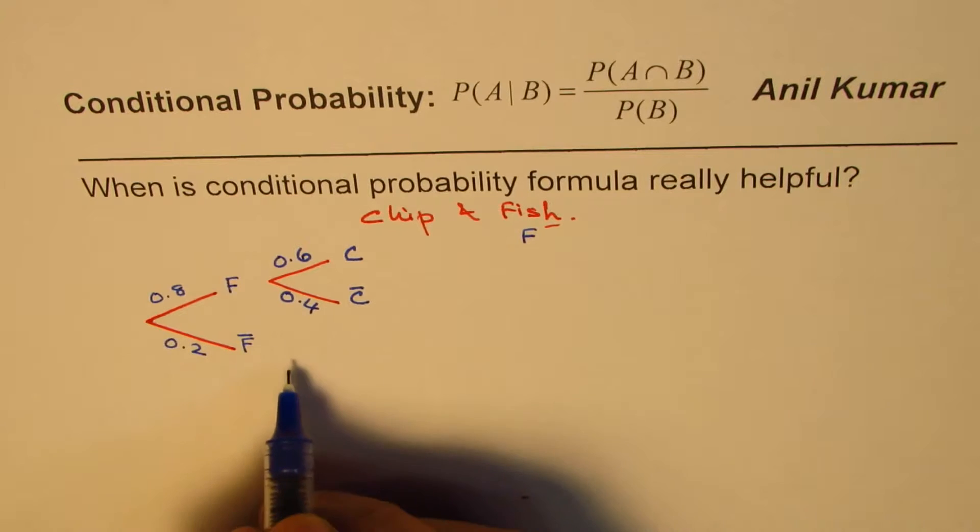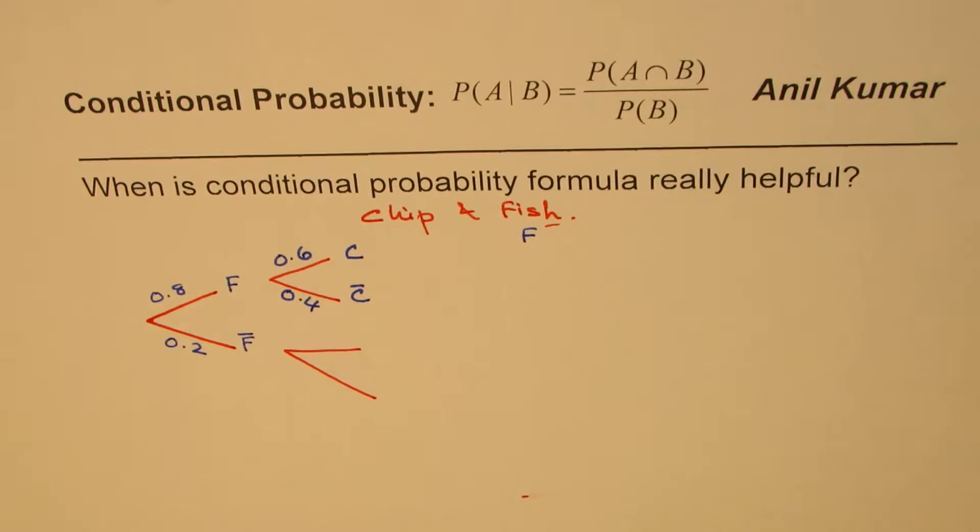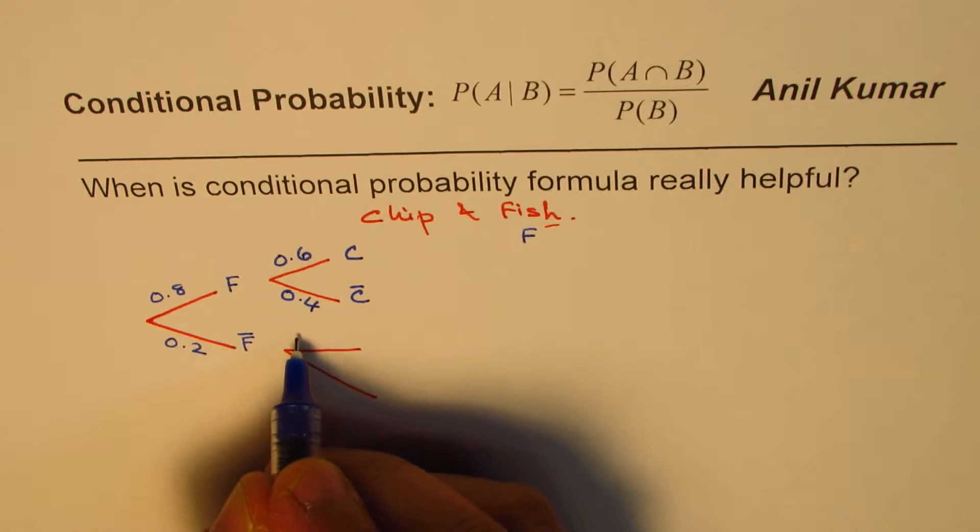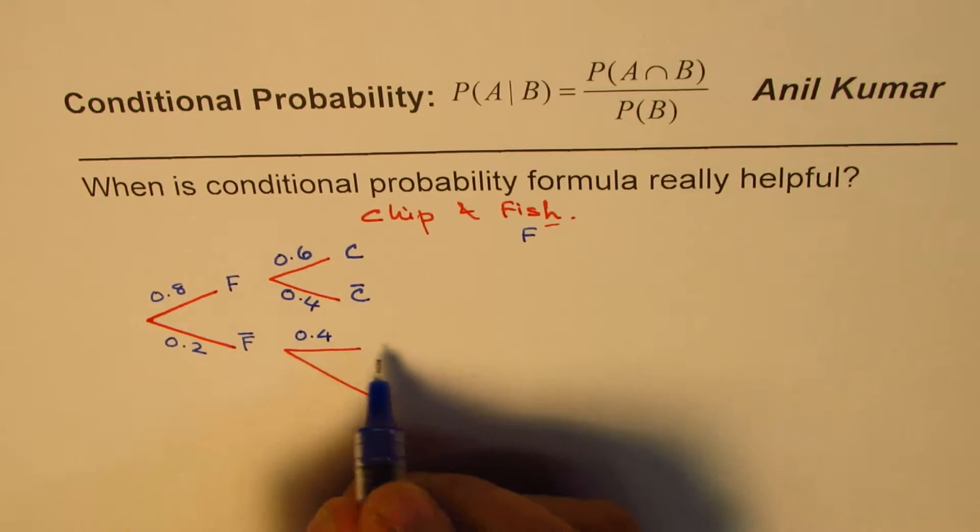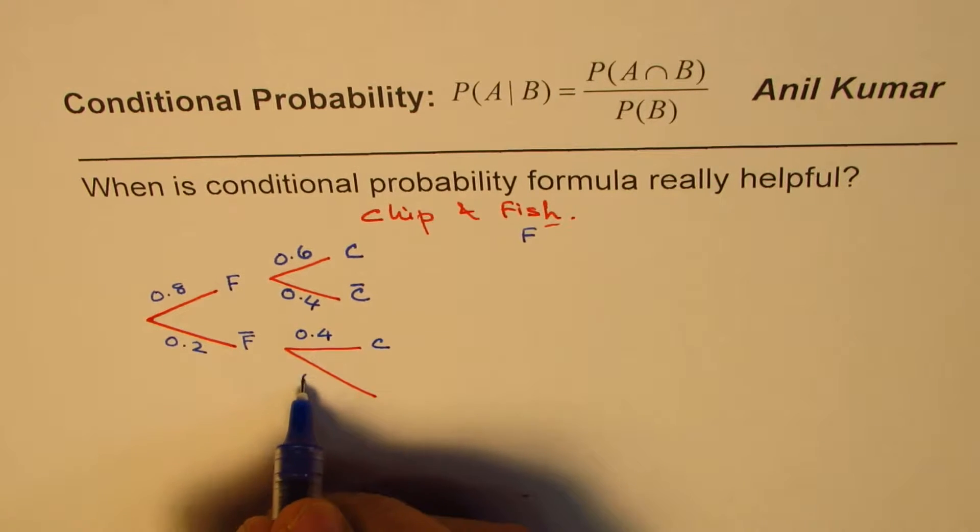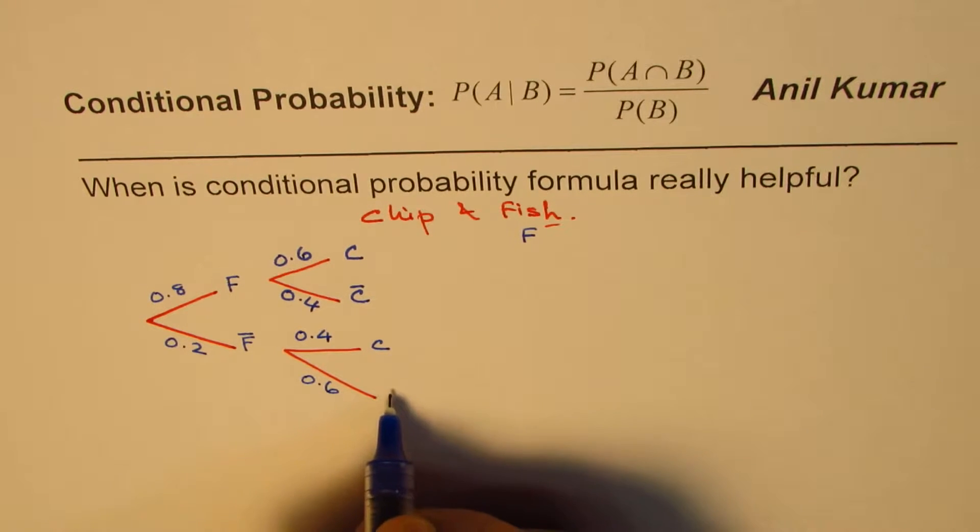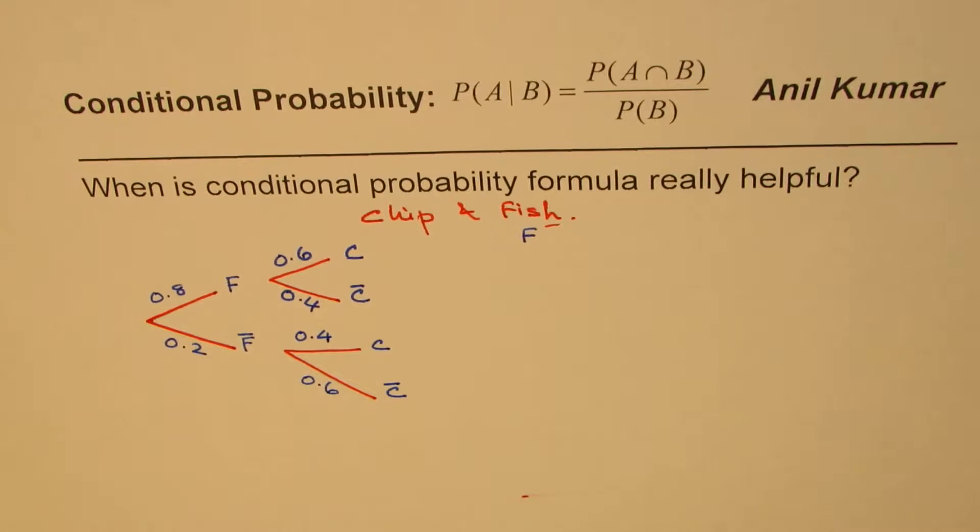So that is kind of a tree chart which will help us solve a question and also answer when is conditional probability formula really helpful. So we are talking about two events which are kind of dependable. So ordering chips is dependent on whether the fish has been ordered or not.